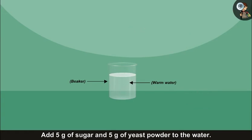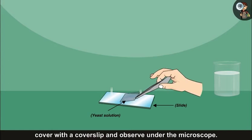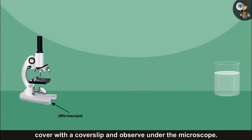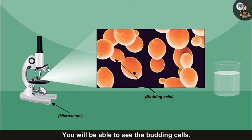Stir gently and observe after 5 minutes. Take out a few drops of this yeast solution on a slide, cover with a cover slip, and observe under the microscope. You will be able to see the budding cells. Draw a diagram of the cells that you see.